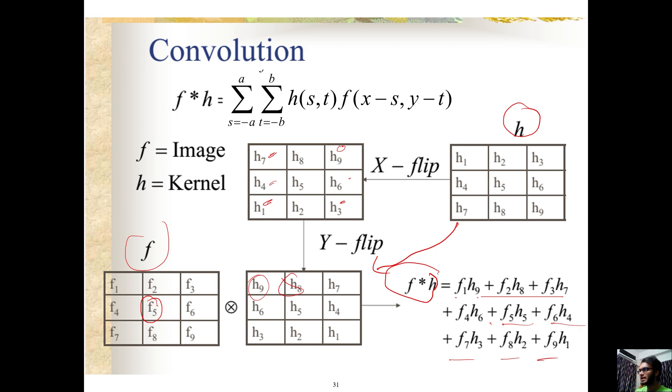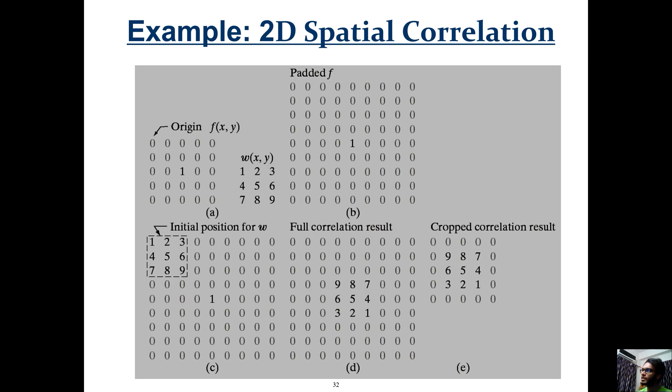For convolution, the key difference is that we flip the filter. The image may need padding - we can pad with zeros or duplicate border values. For convolution, we take the filter and flip it both horizontally and vertically before applying it.